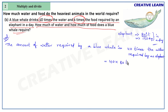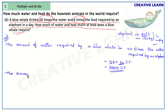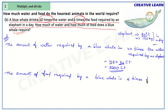In the ones place there is a zero, so keep it here; in the tens place there is also a zero, so keep it there too. The remaining number is 4; 4 eights are 32 — so the total is 3200 liters of water required by a blue whale in a day.